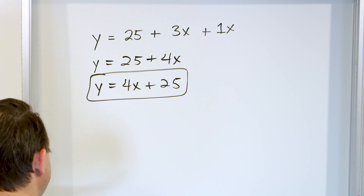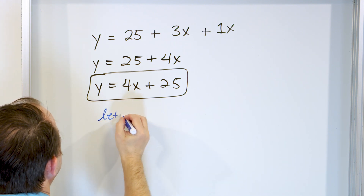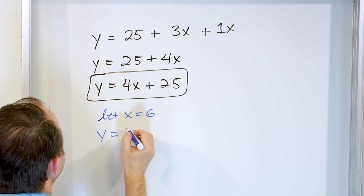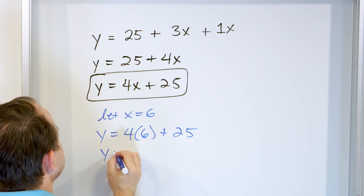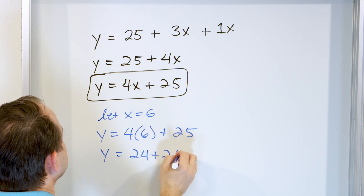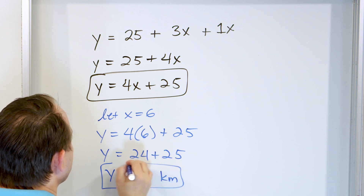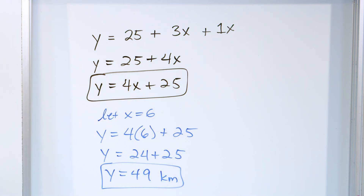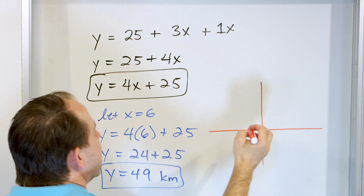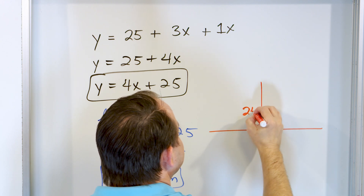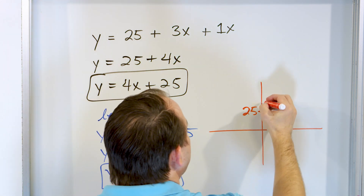If she trains six more times this month, we let X equal six. Then Y = 4 times 6 plus 25, which is 24 plus 25 = 49 kilometers total. Let's do a quick sketch. The Y-intercept is at 25, so I'll put 25 somewhere on the graph. The slope is four, meaning rise over run - up four and then over one - so it's going to be a steep line.